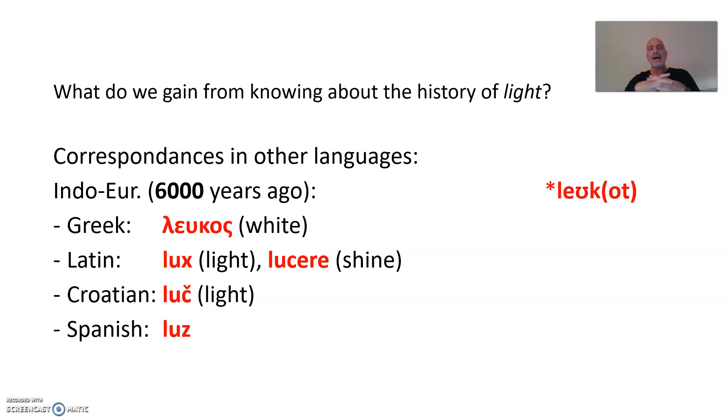And so what do we gain from that? What do we gain from knowing about the history of light? First of all, correspondences in other Indo-European languages which have a word also deriving from the Indo-European stem leukot. Greek, very close still, something like 2,500 years ago, leukos, today present day lefkos. But you have Latin lux or lucere in Latin. Croatian, I was just told, luch, or in Spanish luth, and so on. So you see that there are certain correspondences, and you may draw parallels to other languages if you know about these things.